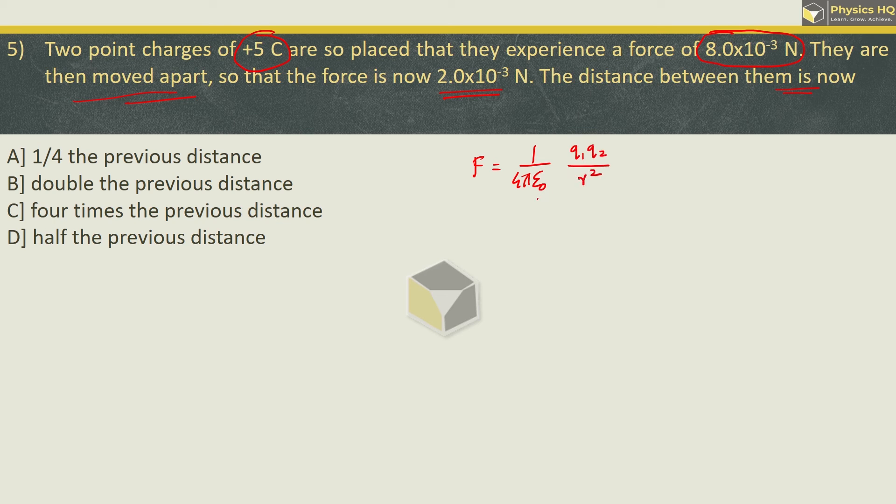Once again, force formula: 1 upon 4 pi epsilon naught q1 q2 upon r square. Now for the given scenario, 1 upon 4 pi epsilon naught is same, charges are also same. So we can say force is inversely proportional to distance squared. So we can write F1 upon F2 equals distance in the second case squared divided by distance in the first case squared.